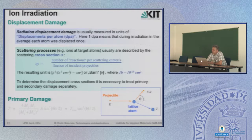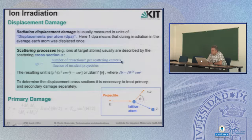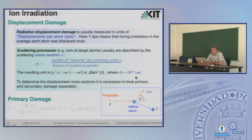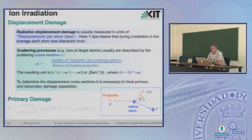A scattering process — ions hitting target atoms — is described by the cross section sigma. This gives the number of reactions per scattering center per second divided by the fluence of the incident projectiles. The resulting unit is area, specifically square centimeters or barn, where one barn equals 10⁻²⁸ square centimeters.